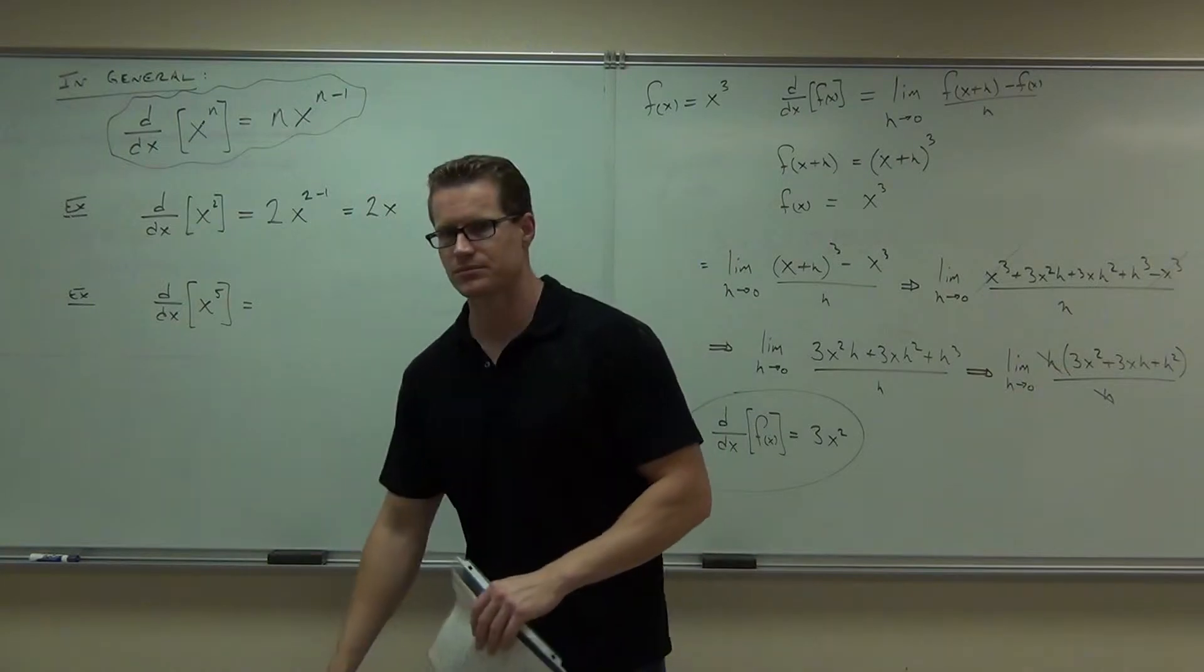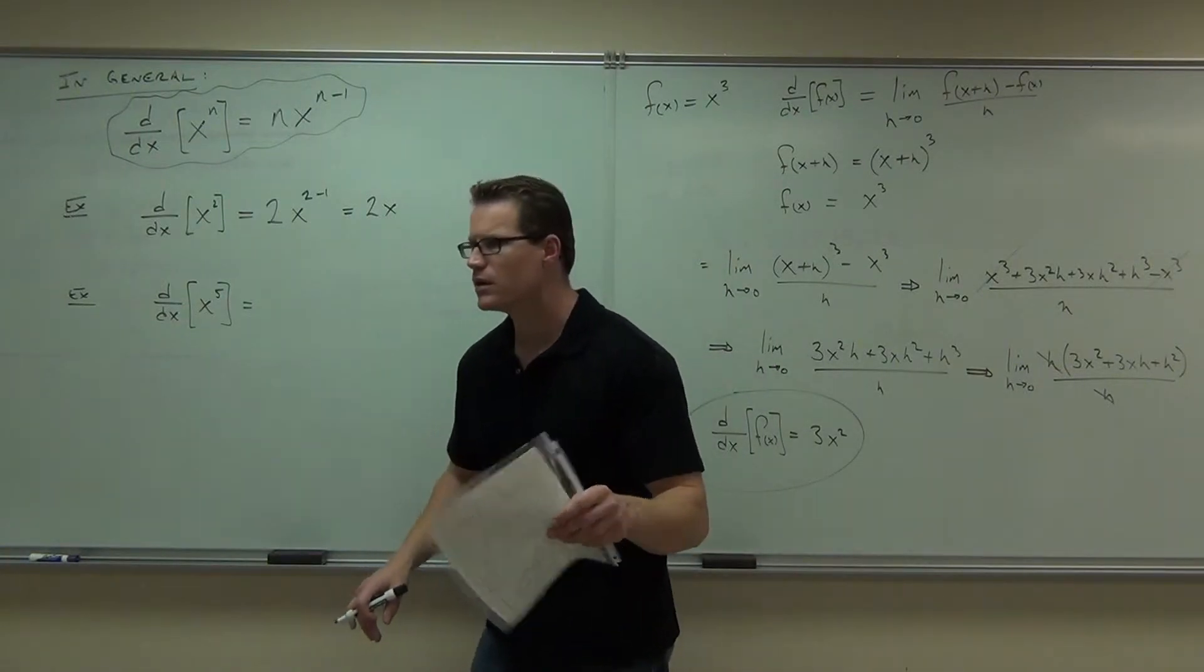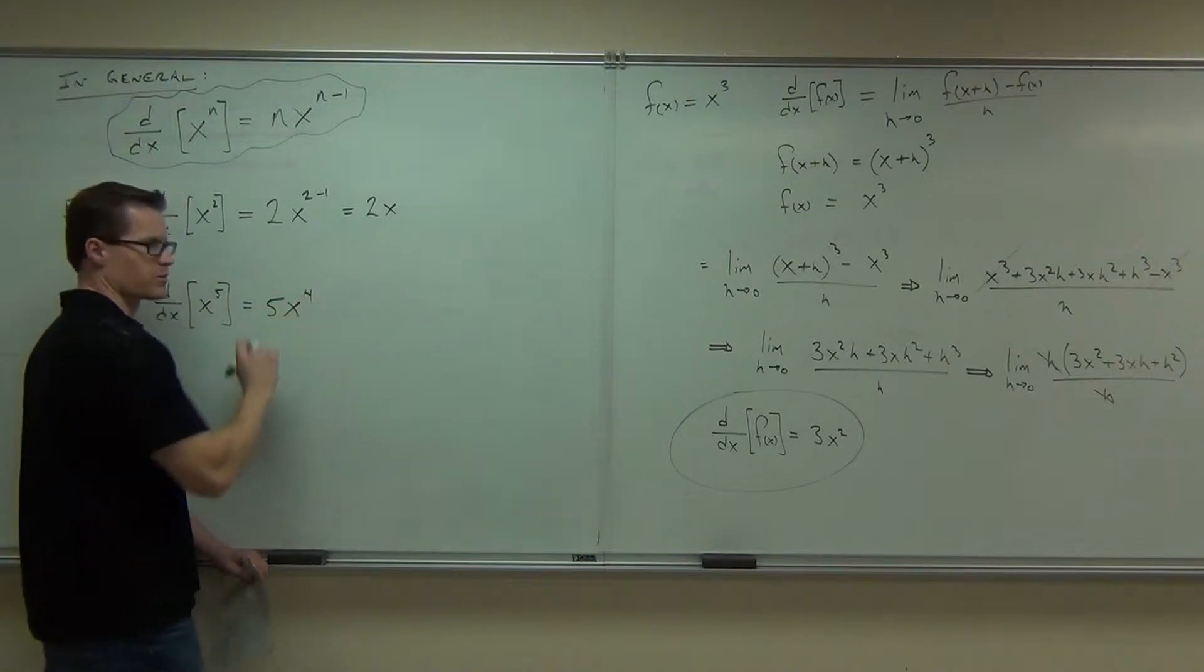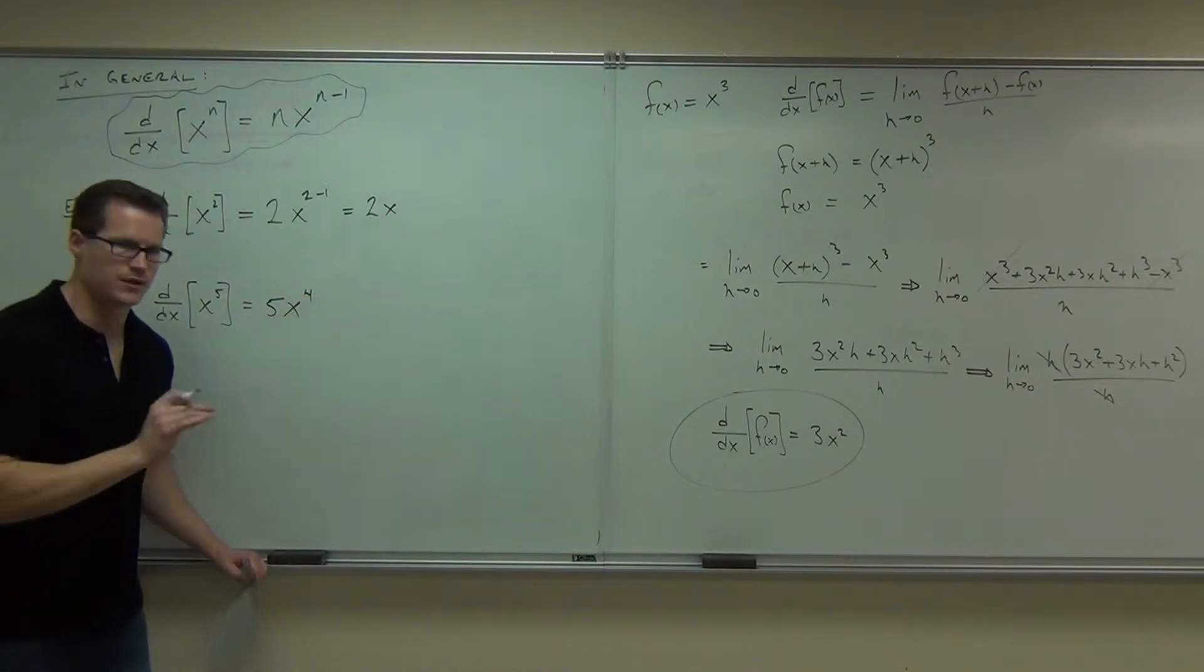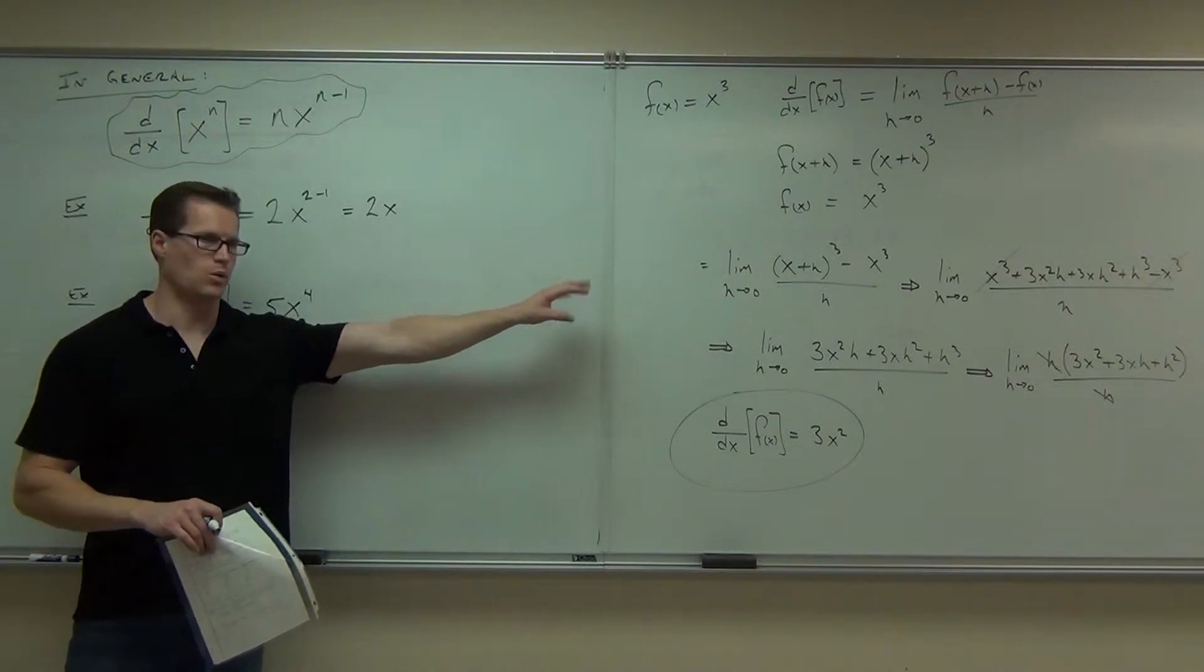Can you take the derivative of x to the 5th? How much is it? Good. We bring down the 5, x to the, subtract 1 from that exponent, you get x to the 4th power. That's the derivative. Very nice, very quick. If you did it this way, would it work out? Yes, absolutely. It's just going to take you a whole long time.